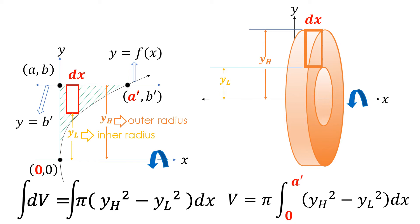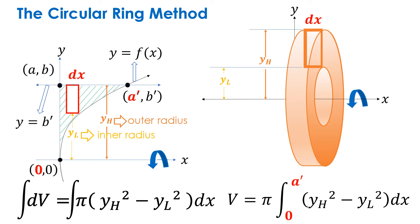Remember: if the element is perpendicular to the axis of revolution but does not touch the axis of revolution, a circular ring is formed. This method of solving the volume of a solid of revolution is called the circular ring method.